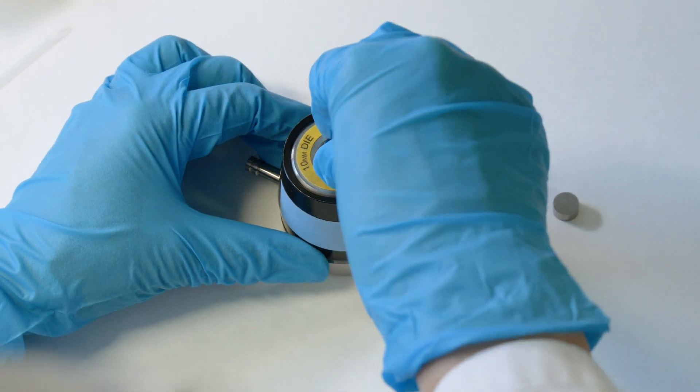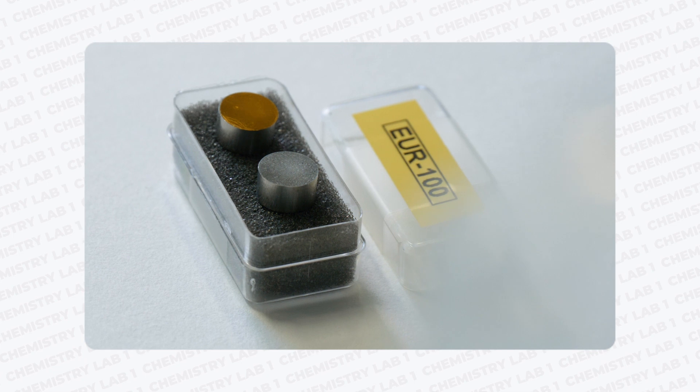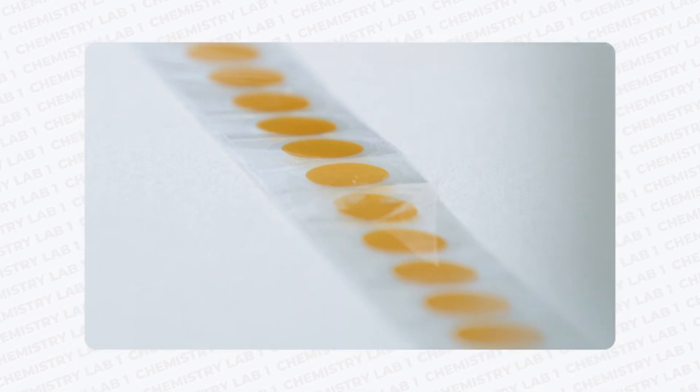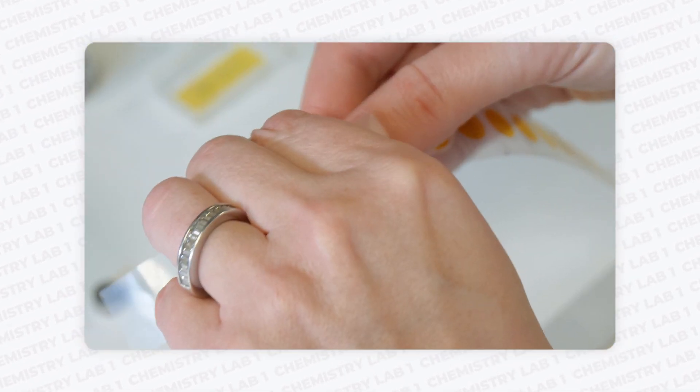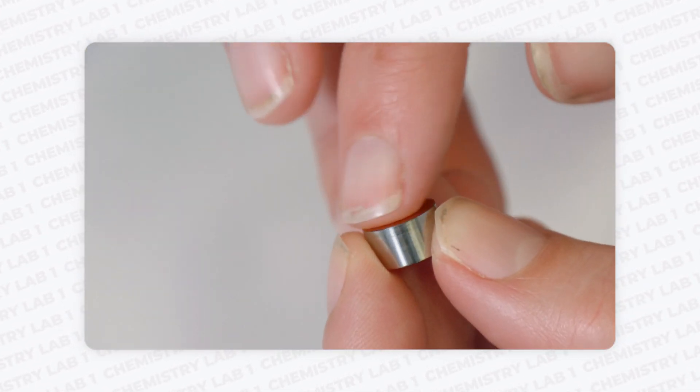And make sure the die sits on top of the base. To facilitate demoulding the pellet, you also have the option of gluing a pre-cut capton tape to the die diameter.